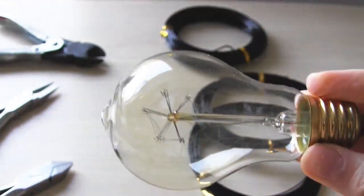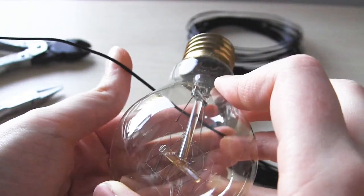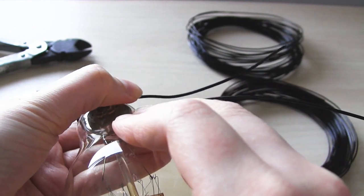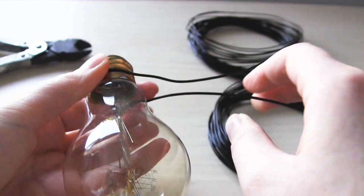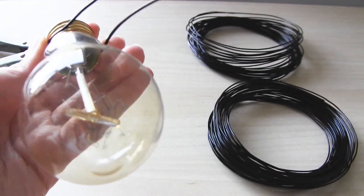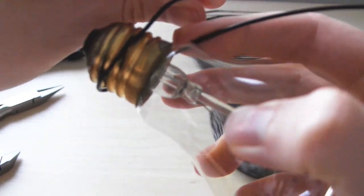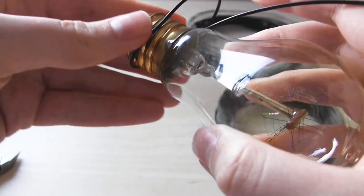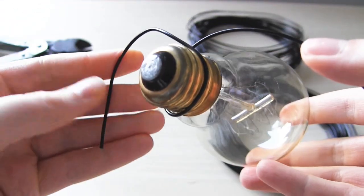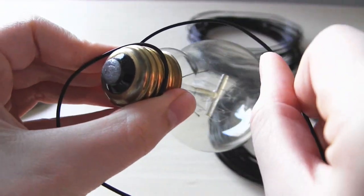I'm going to use the 1.5mm craft wire first, as this is the strongest and can take the weight of the bulb easily. I'm just taking the wire and first wrapping it around the metal section of the light bulb. I want it so the wire goes all of the way around this metal section, and then on each side is enough length of wire to form each leg.